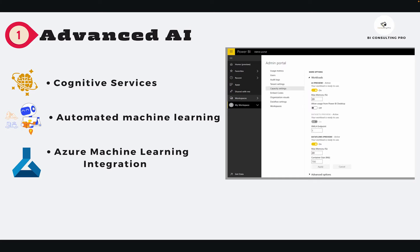The very first feature is Advanced AI. With Microsoft Power BI Premium you get access to AI-related features including cognitive analysis, machine learning using Azure, and automated machine learning algorithms. These advanced features are not available with a Power BI Pro license. So this is feature number one — advanced analytics using Microsoft Power BI Premium.